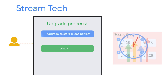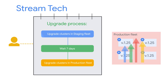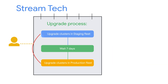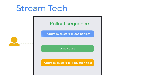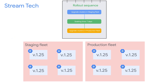Then they want to wait a week to confirm the upgrade was successful in the staging fleet. Once they've confirmed those workloads are running as expected, they want the upgrade to roll out to the production clusters. This process of defining the order in which fleets are upgraded is called creating a rollout sequence. The waiting period of seven days is referred to as soaking time — the amount of time that should elapse between each rollout. So StreamTech goes ahead and creates a rollout sequence with these specifications.